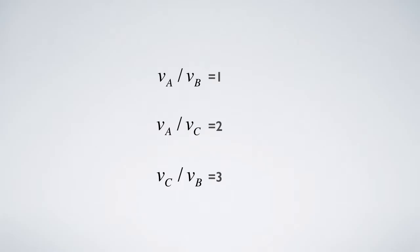For example, from the first two equations, VC over VB must be 0.5, but the third equation shows that it is 3.